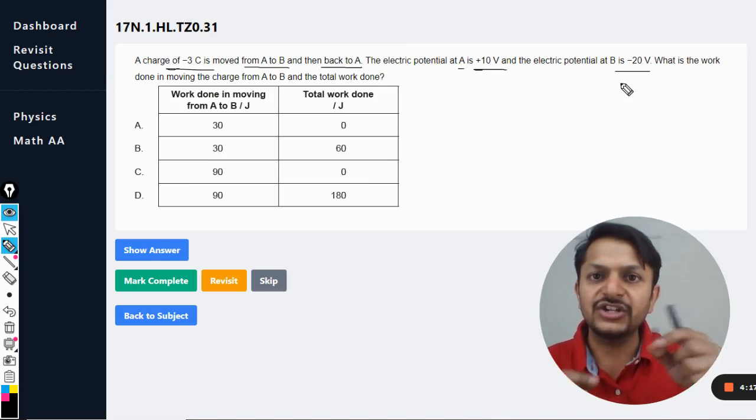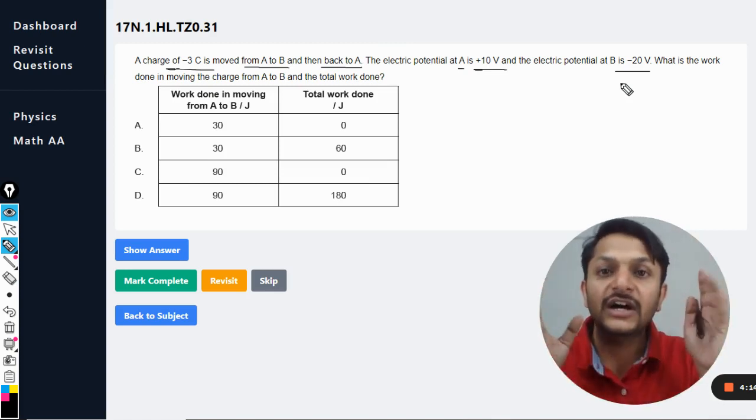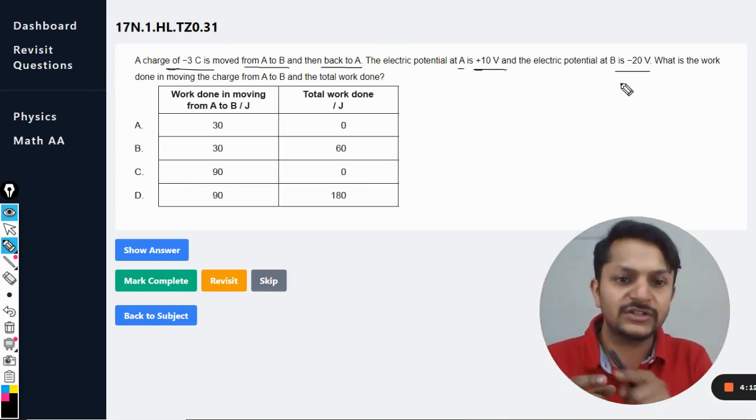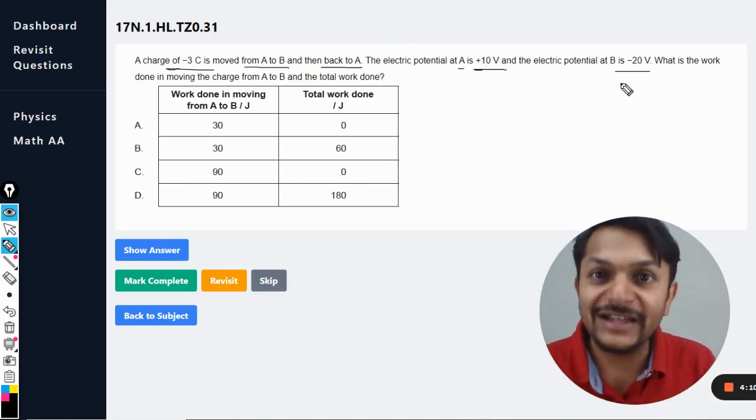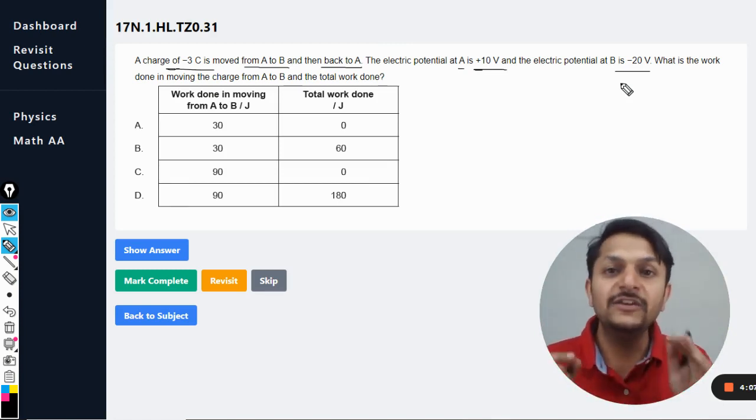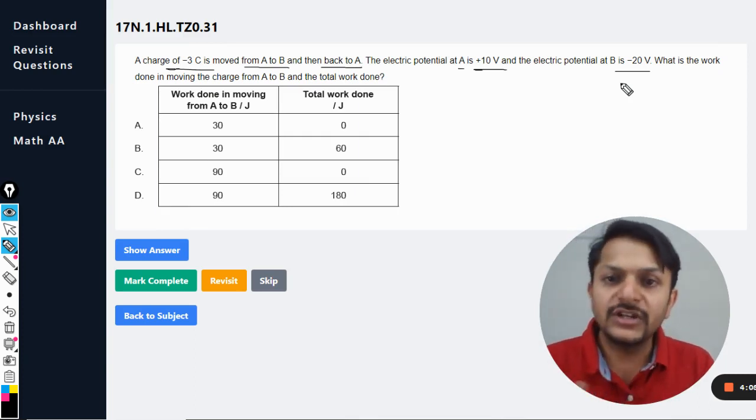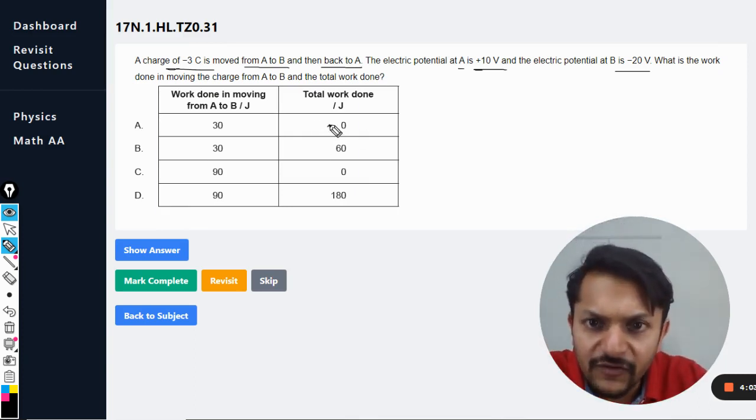Whenever a charge is completing its journey in one particular circle or system in which the net displacement comes out to be equal to zero, the work done becomes zero. So definitely the total work done will be zero because electric field is a conservative field.